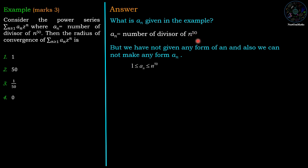So a_n is the number of divisors of n^50. The smallest divisor of n^50 is 1 and the largest divisor of n^50 is n^50 itself. Therefore we can write down 1 <= a_n <= n^50.